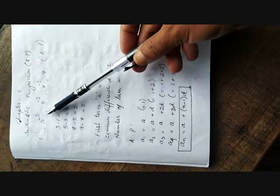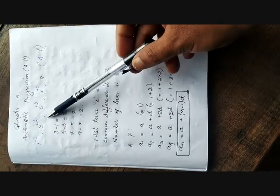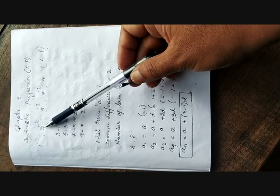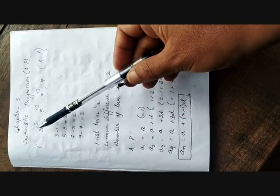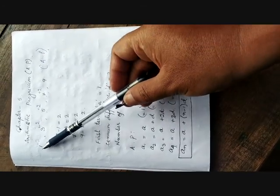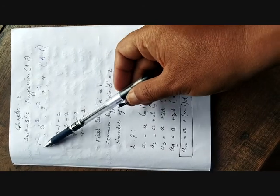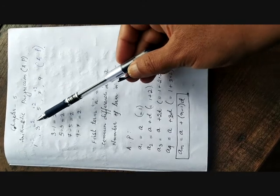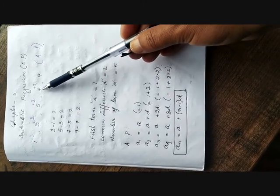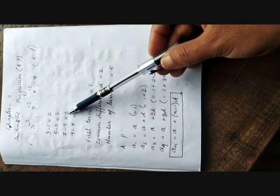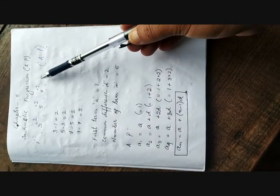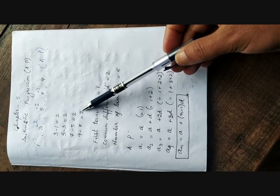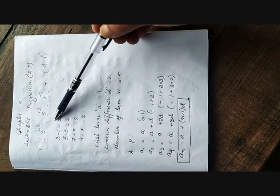1, 3, 5, 7, and 9. So to check whether this is arithmetic progression or not, we need to find out the difference of its consecutive terms. That means the second number minus the first is equal to 2. The third number minus the second number is equal to 2. The fourth number minus the third number is equal to 2. The fifth number minus the fourth number is equal to 2. That means we are getting same difference for its consecutive terms.